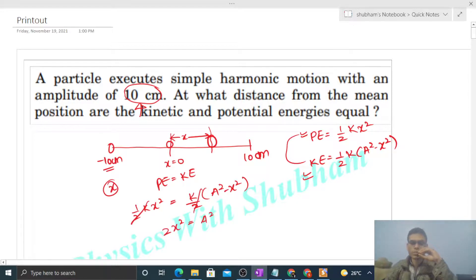So x will be a by root 2, plus minus. So you can see a is given as 10, so it will be 5 root 2, plus minus. Plus minus because one position will be here and one position on the other side of mean position.